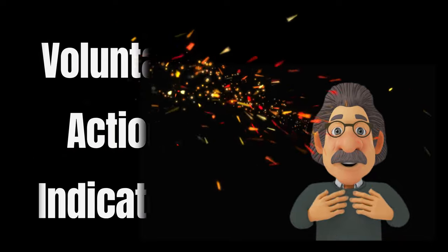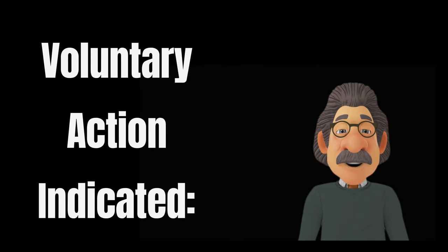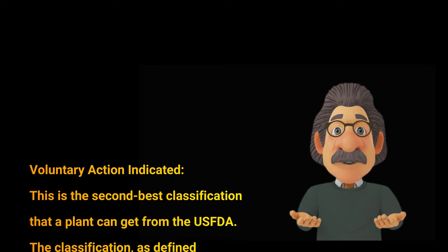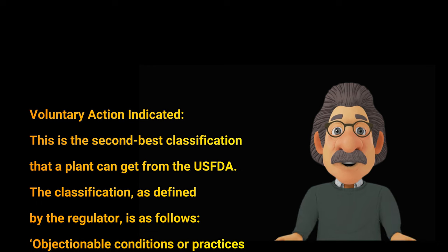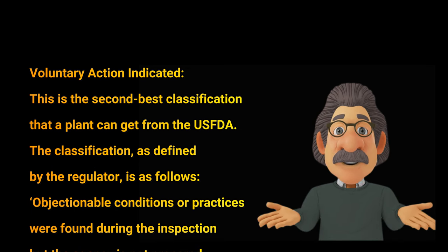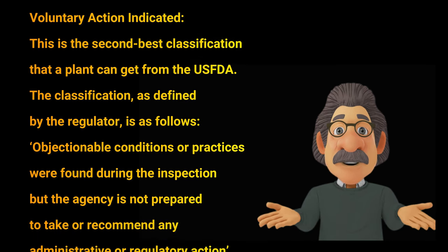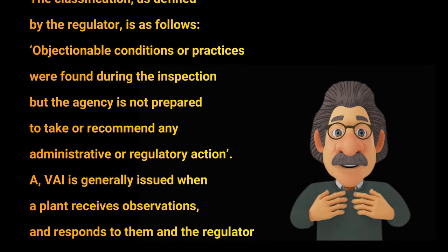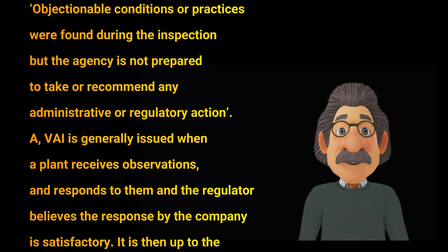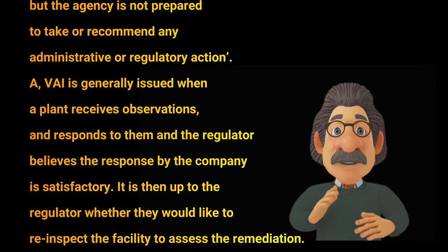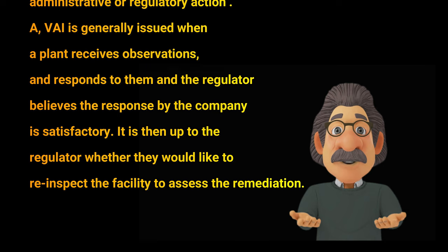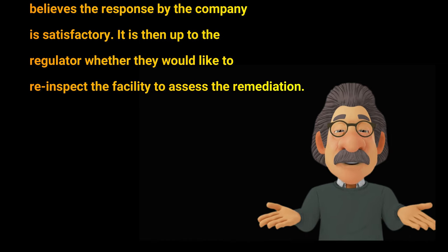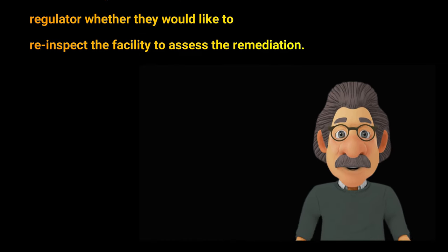The second one is Voluntary Action Indicated (VAI). This is the second best classification that a plant can get from the U.S. FDA. As defined by the regulator: objectionable conditions or practices were found during the inspection, but the agency is not prepared to take or recommend any administrative or regulatory action. A VAI is generally issued when a plant receives observations, responds to them, and the regulator believes the response by the company is satisfactory. It is then up to the regulator whether they would like to re-inspect the facility to assist the remediation.